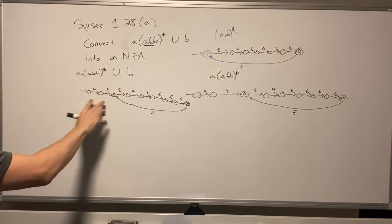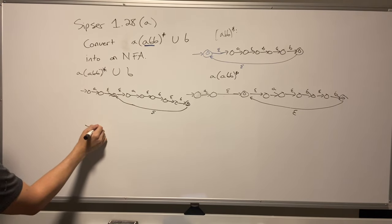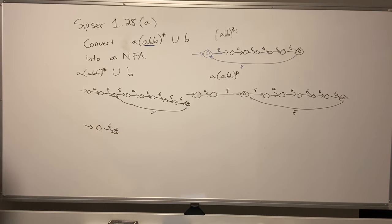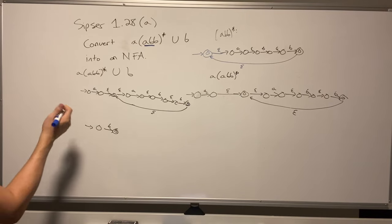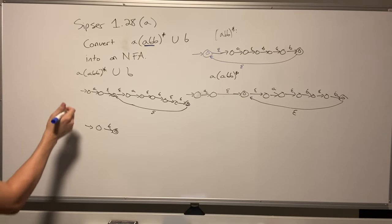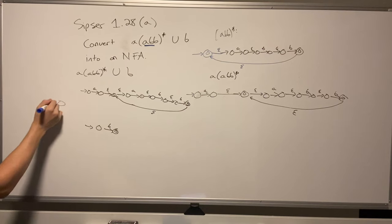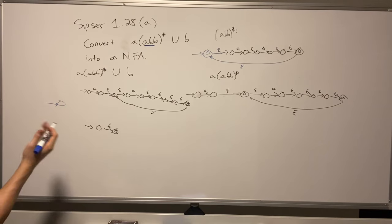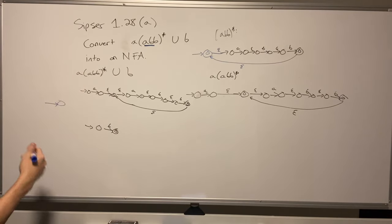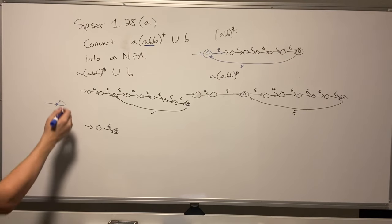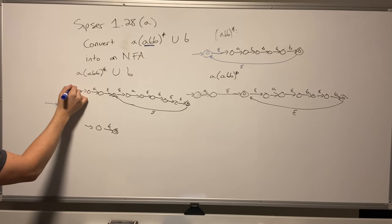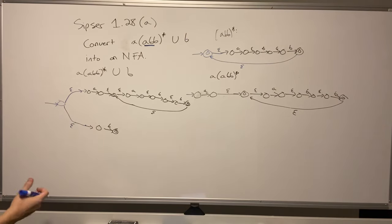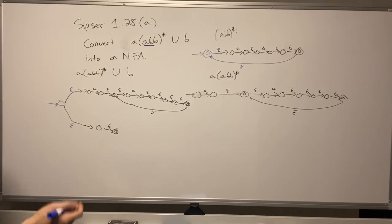That transition should be epsilon — I should have corrected that earlier. So that's the first half. Now the second half is just the 'b' machine. For union, we make a new start state that epsilon-transitions to both of the original starting states. This new state is not final in general, but it doesn't matter because we are doing epsilon transitions anyway — if one of the halves accepts the empty string, we can just epsilon to that state.